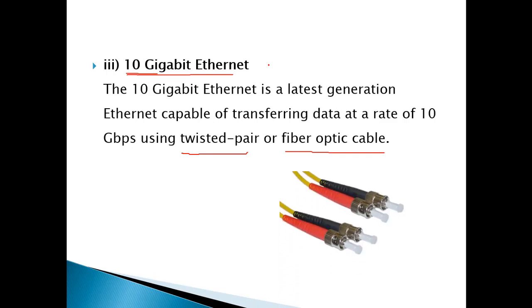Here we have an image showing different types of coaxial cables. In upcoming lectures, we will discuss these media topics in detail — types of media, guided media, and unguided media. Guided media normally refers to cables — twisted pair, coaxial cable, fiber optic, etc.